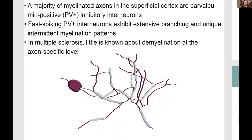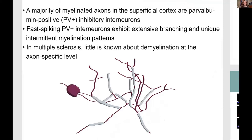In the cortex, almost half of all the myelin comes from this specific neuron — a parvalbumin positive, or PV positive, interneuron. They are very fast spiking GABAergic interneurons that modulate neuronal networks. Not much is known about demyelination at the axon-specific level, especially in diseases like multiple sclerosis. The aim of this project was to demyelinate mice and observe total myelin patterns in the cortex as well as patterns of myelination on PV positive interneurons. We suspected that because these interneurons make up about half of all the myelin in the cortex, a lot of the myelin left over after demyelination would persist on these neurons.